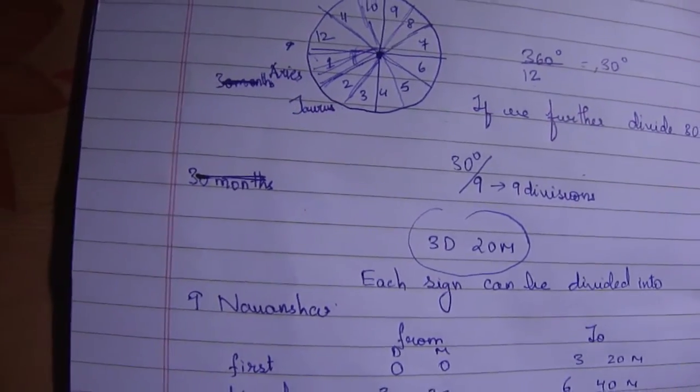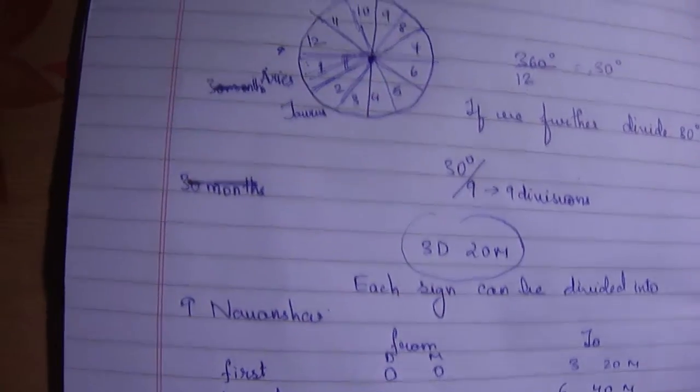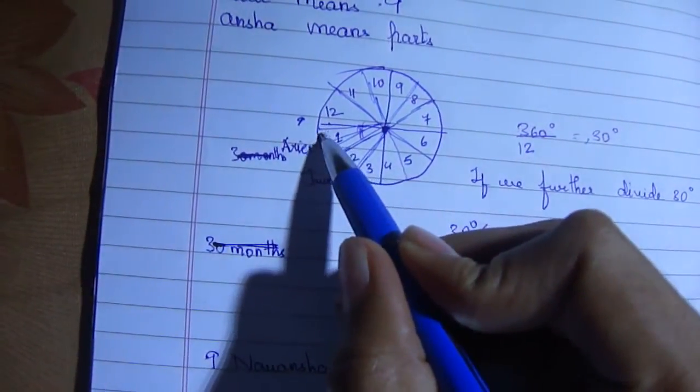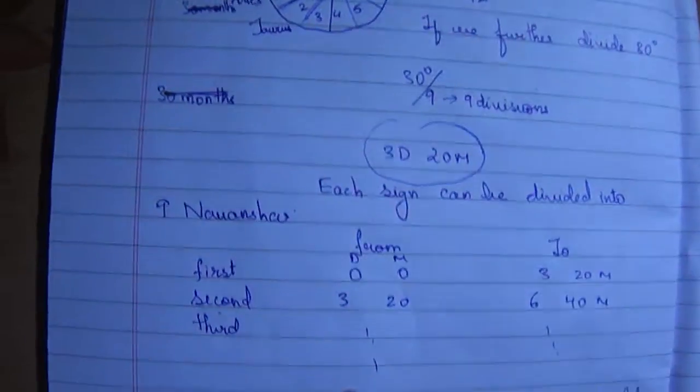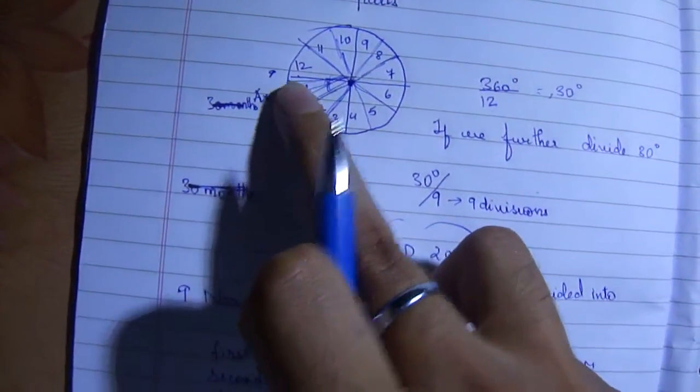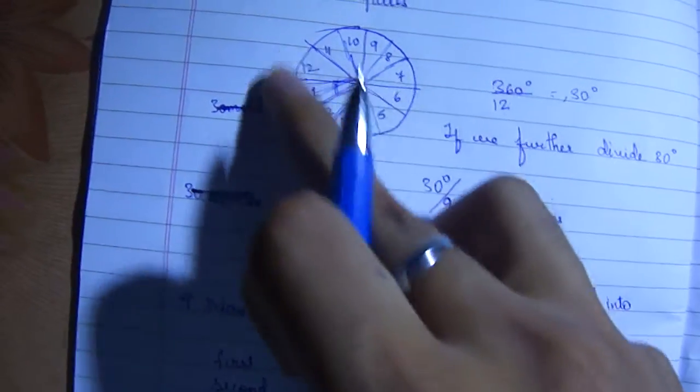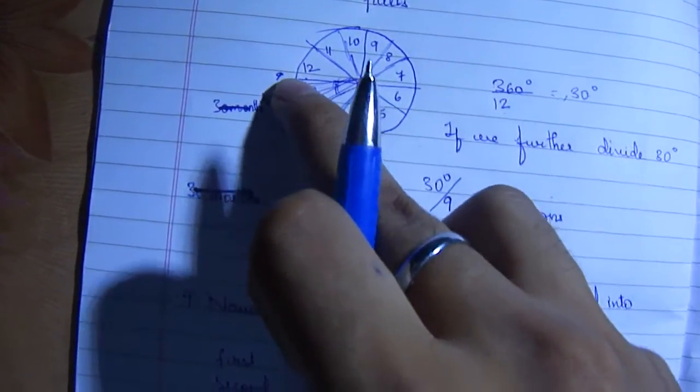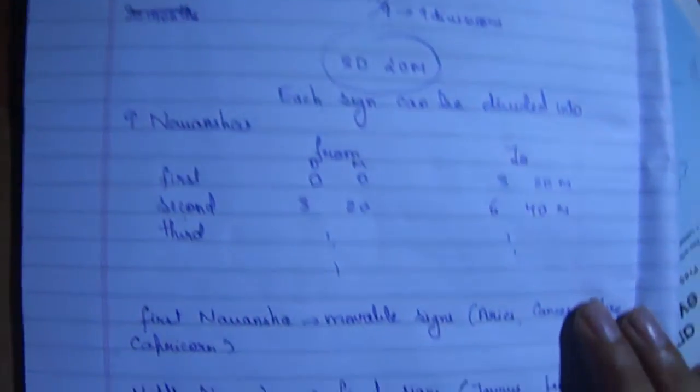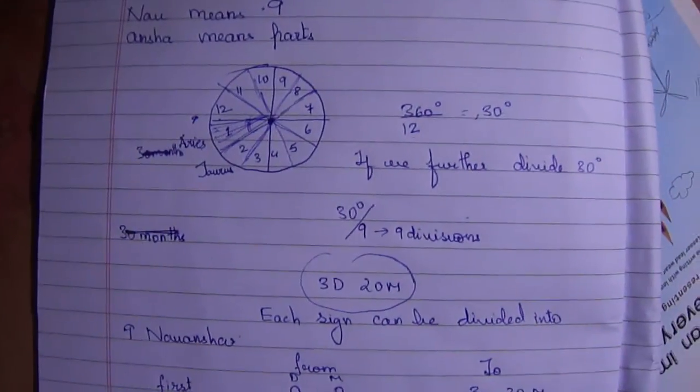Now there is another concept known as Vargottama. Vargottama means, we understand that the first sign is Aries, and further the first part is again Aries, so Aries in Aries. We know that this whole region, the first region is of Aries, and further we divide it into nine parts, of that the first part is Aries. So that Aries within an Aries sign, that is known as Vargottama.